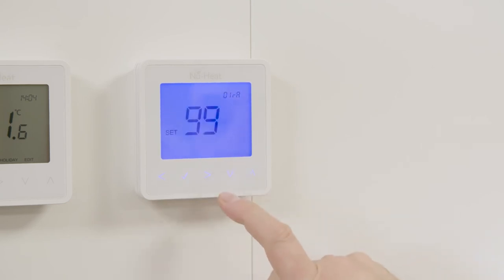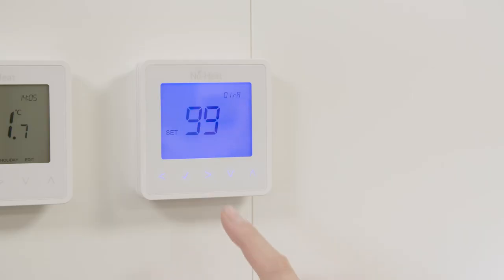Use the up and the down keys to set the large digits to the board address of the UH8 RF wiring centre. This is the number that is set on the UH8 RF switches. You must use a unique board address for each of the wiring centres installed. Press tick once.